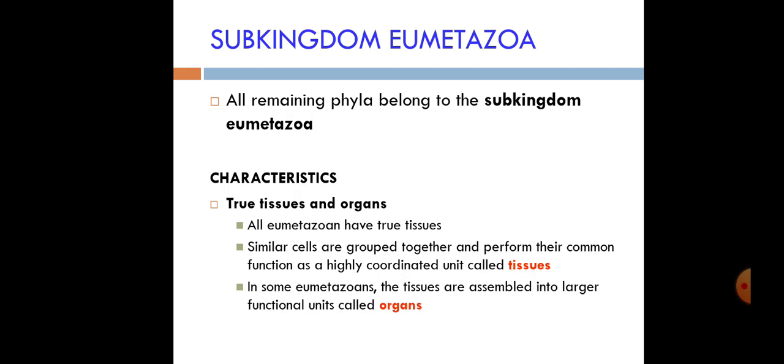Now let's look at the characteristics of Eumetazoa. 'Eu' means true — these are the true animals we see today. All Eumetazoans have true tissues. Insects have true tissues, annelids have true tissues, chordates have true tissues. They also have organs — tissues are assembled into larger functional units called organs through a process called organogenesis.